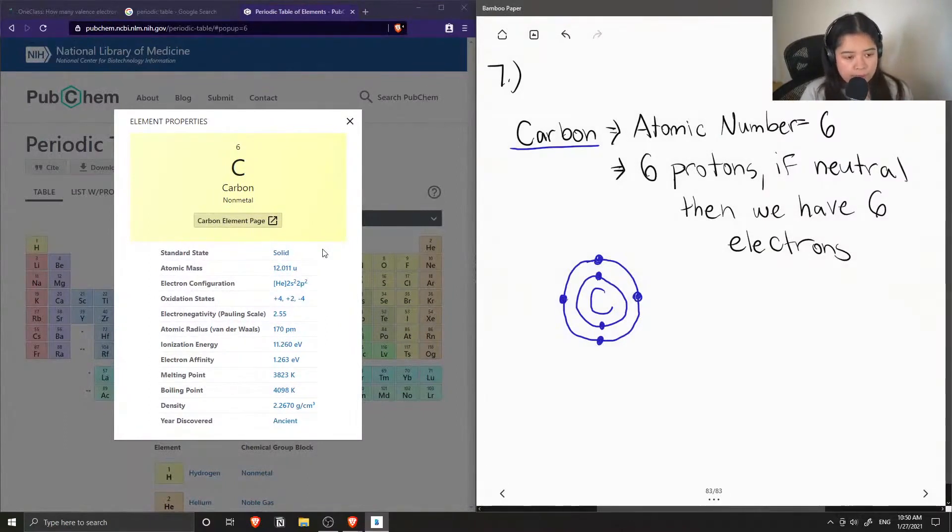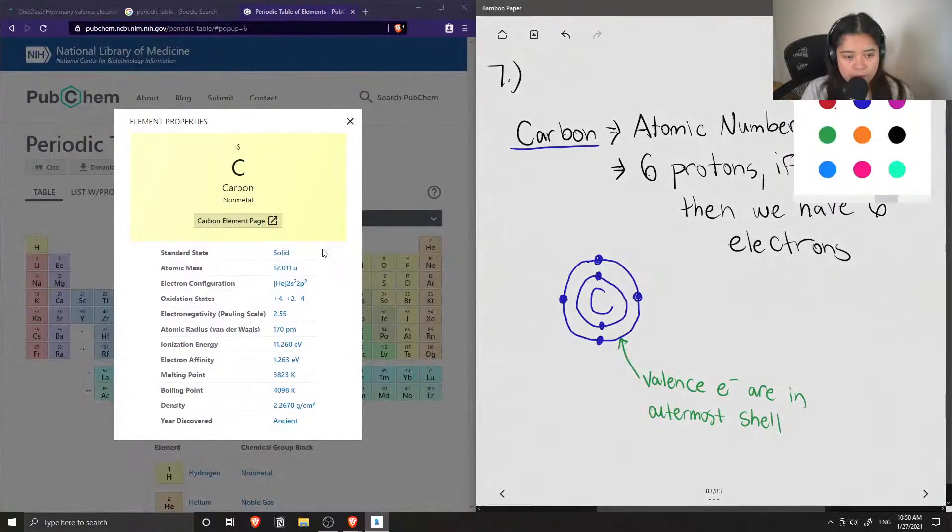So when we talk about valence electrons, these are the electrons in the outermost shell. So for carbon, carbon has four valence electrons.